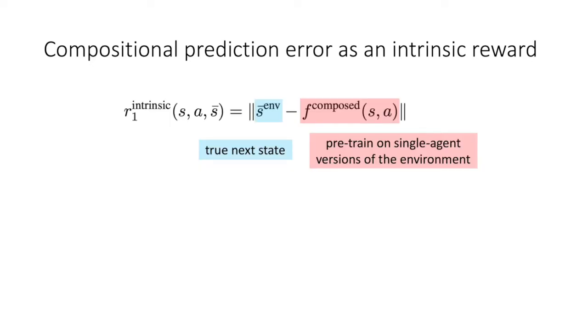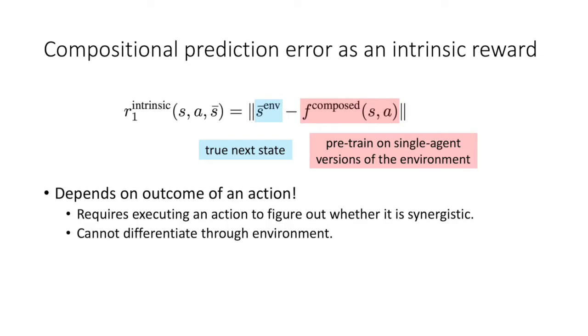So we have the following expression for intrinsic motivation for encouraging synergistic behavior. The single-agent predictive models are pre-trained on single-agent versions of the environment. Although this reward function will encourage synergy, an issue is that it depends on the true next state S-bar.